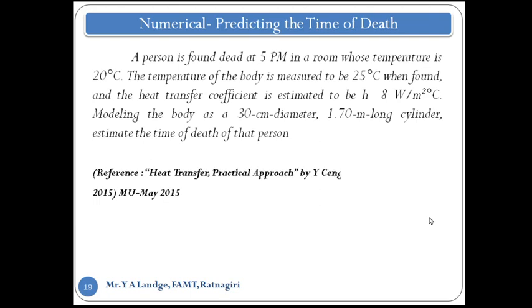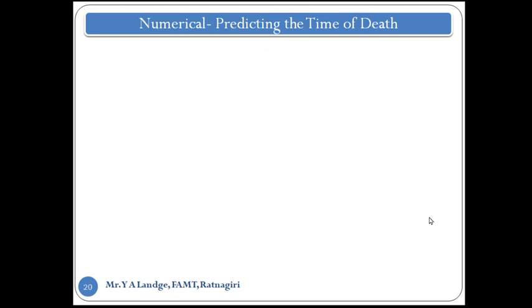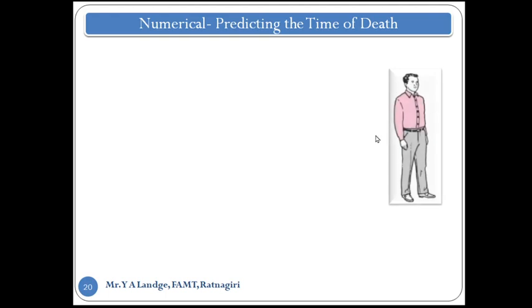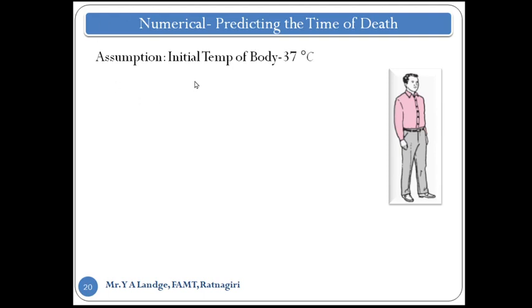This numerical is from the Cengel book, second edition. Now let's consider the man and find the time of death. There are certain assumptions we first look at. The initial temperature of the body — when the person was alive — is assumed to be 37 degree Celsius.